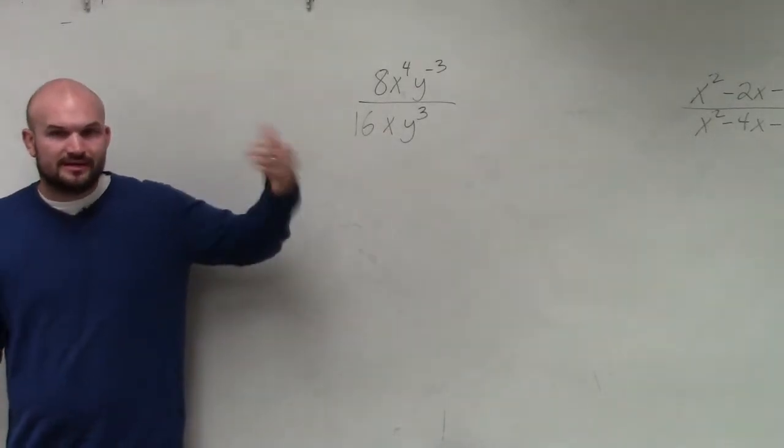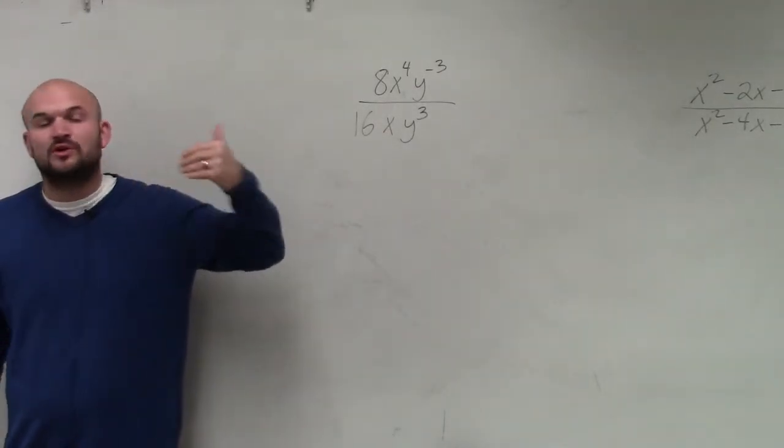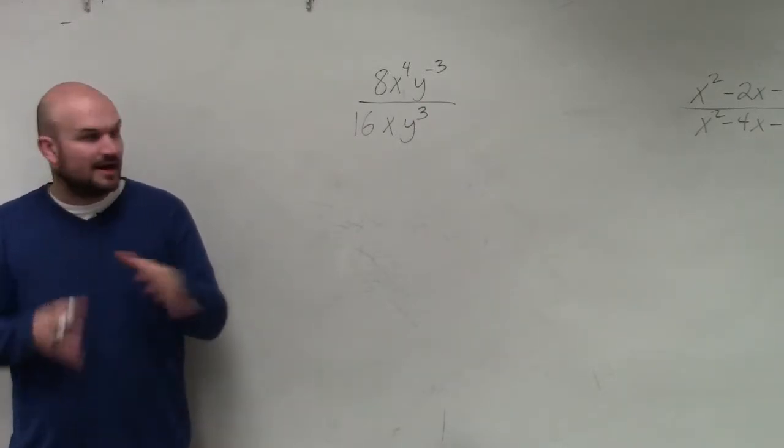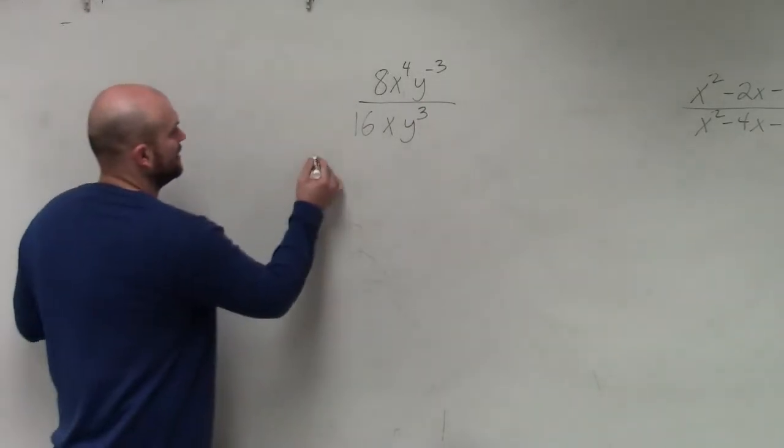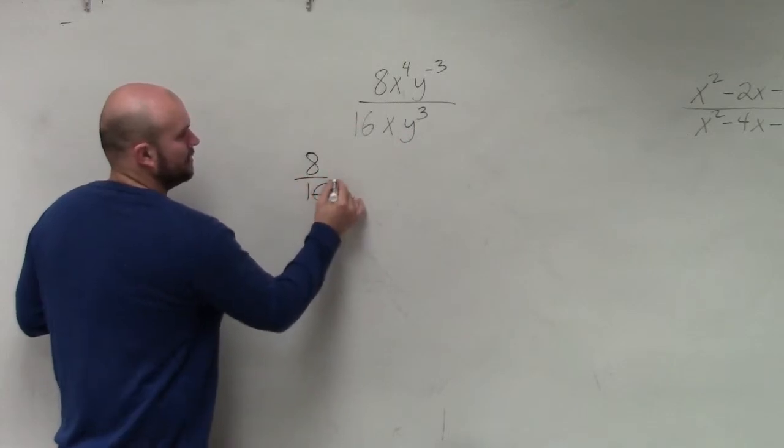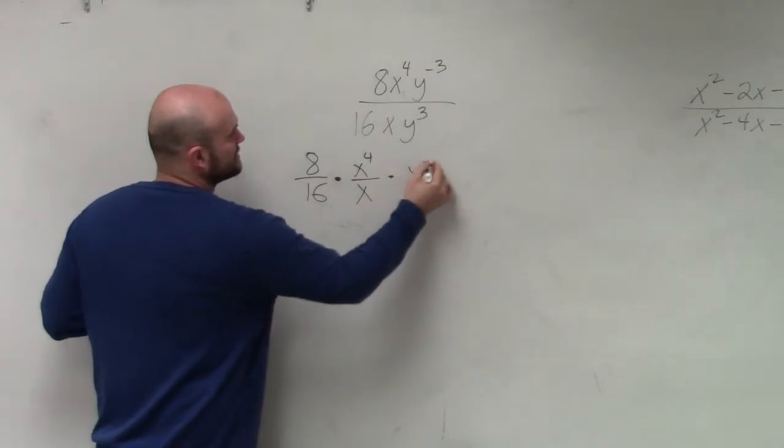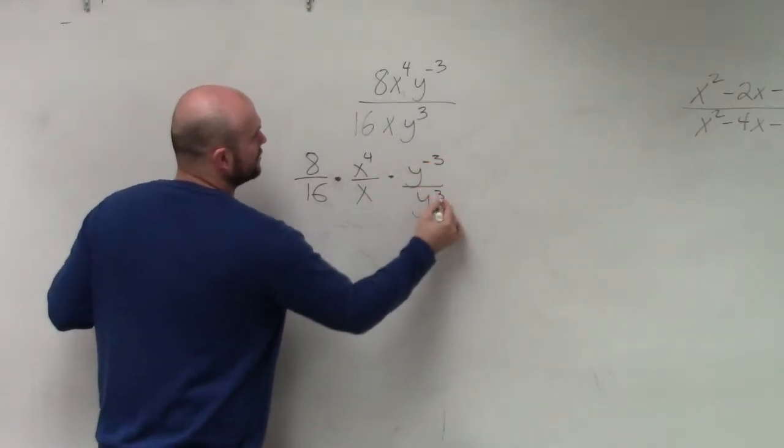But the thing I like to do, this can get very confusing, especially when we do multiplying and dividing. So the best thing I like to do is group your terms that you can simplify. We know we can simplify 8 over 16, and that's going to be multiplied by x to the fourth over x times y to the negative third over y cubed.